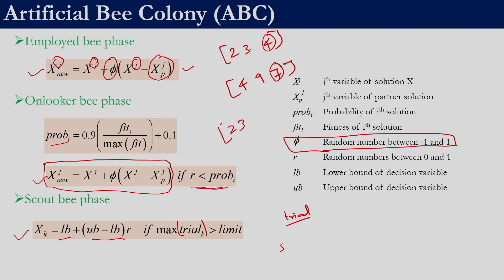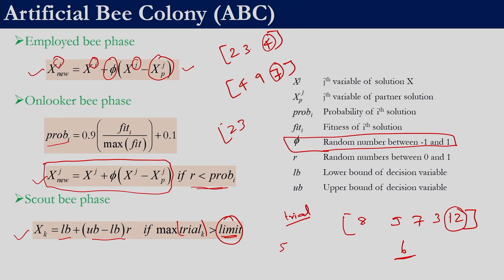Limit is a user-defined parameter. If 5 solutions exceed this limit — for example, if the trial counters for 6 solutions are 8, 9, 7, 3, 2, and 12, and the limit is 6 — then the solution with the maximum number of failures (12 failures) will be updated. Only one new solution is generated in the scout bee phase.